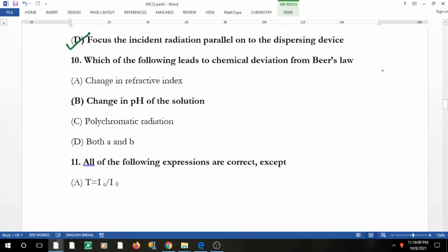Which of the following leads to chemical deviation from Beer's law? There is no deviation related to concentration. If you change the pH of the solution, then there is deviation in Beer's law.